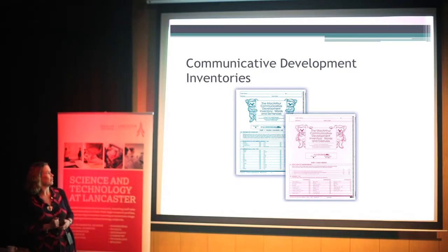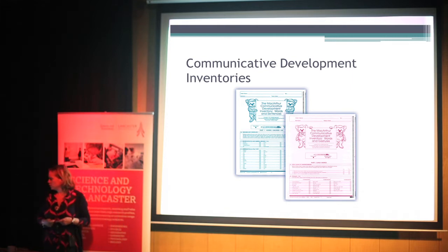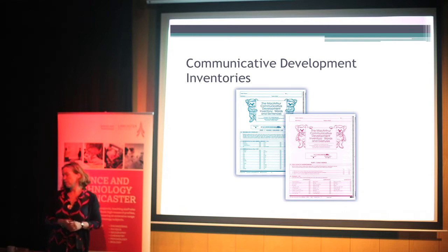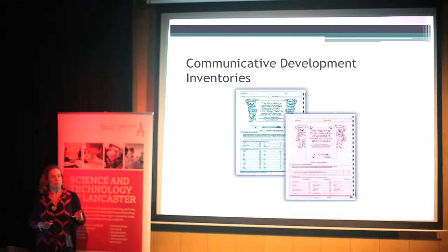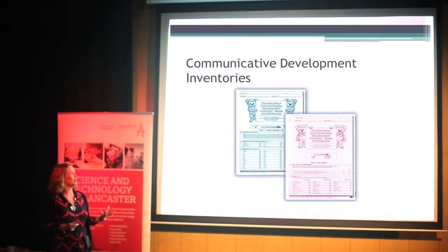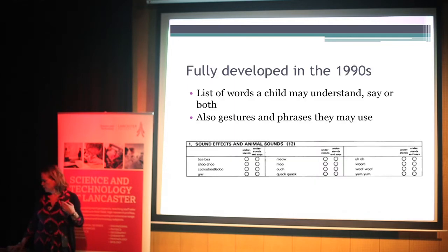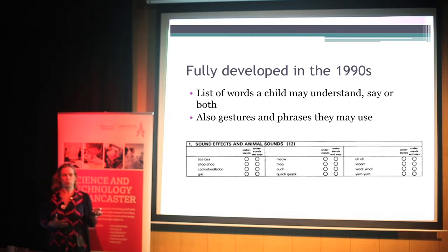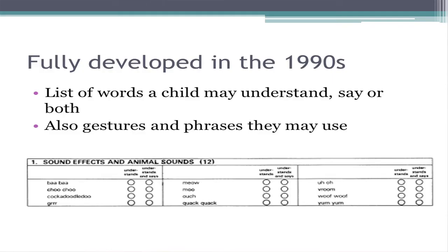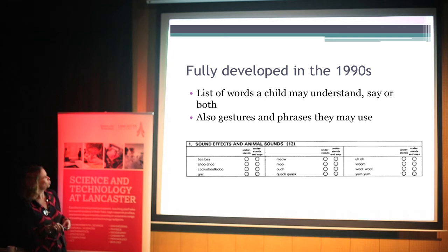These are the original set of Communicative Development Inventories, which is the main area of research I'm going to be talking about. It's mainly used for child language research, but I'll also be talking about other areas of research in which we can use this type of technique. The MacArthur Communicative Development Inventories were first fully developed in the US in the 1990s. They consist of lists of words that a child may understand, may say, or both, and they also include gestures that the child may use and phrases they may use.